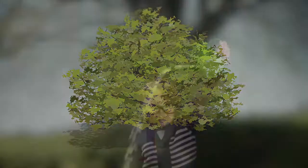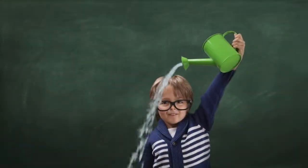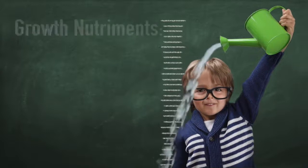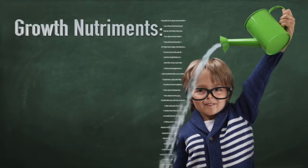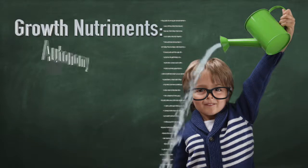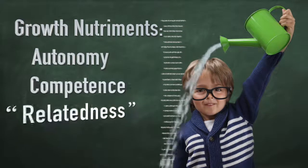One of the fundamental assumptions of self-determination theory is that we have within us the necessary ingredients for growth. Like an acorn has what it takes to become an oak tree, the child has within it all the ingredients to grow into a full and healthy human being. But that will only happen if certain nutriments are provided — the basic psychological needs for autonomy, competence, and relatedness.